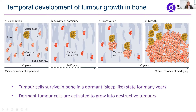We know that these tumor cells can actually live in a dormant or sleep-like state for really long periods of time — in some cases up to 20 years — and they're undetectable in this state, until something happens that switches these tumor cells on, or wakes them up, to grow into these destructive tumors.